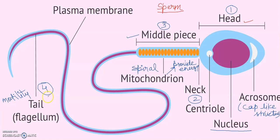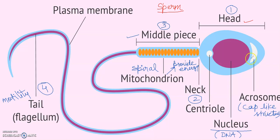The head contains a nucleus and an acrosome region. In the nucleus, condensed DNA — deoxyribonucleic acid — is present, and it has a haploid number of chromosomes. The acrosome is a cap-like structure over the nucleus and it contains hydrolytic enzymes, called acrosomal enzymes, that enable the sperm to penetrate into the cytoplasm of the egg.